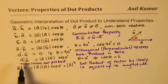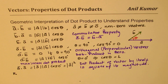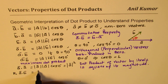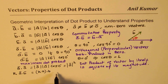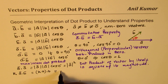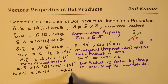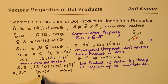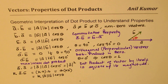Now, if we multiply by a scalar k, then k(a·b) equals (ka)·b, which also equals a·(kb). In all three cases the result is k times |a| times |b| times cosθ. This is called the associative property of dot product.